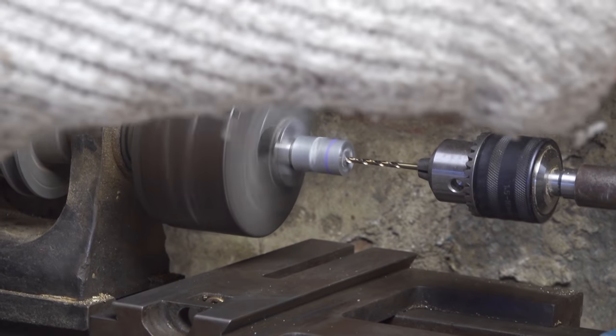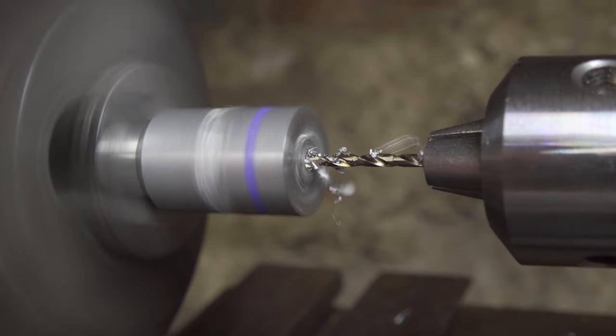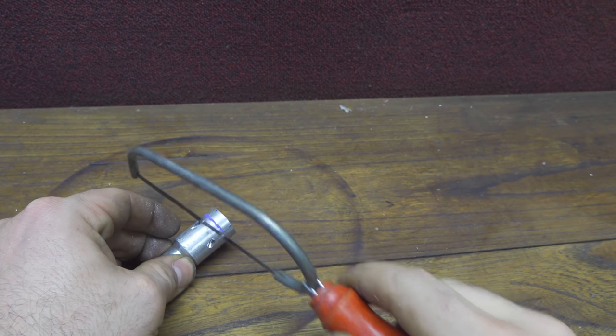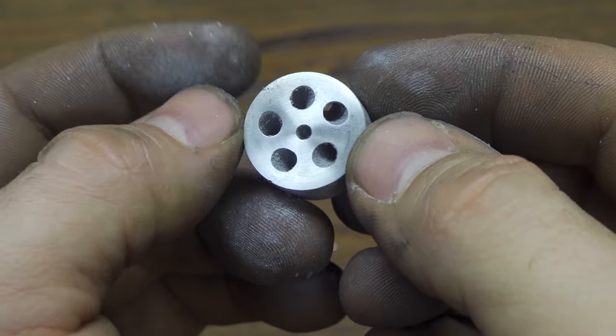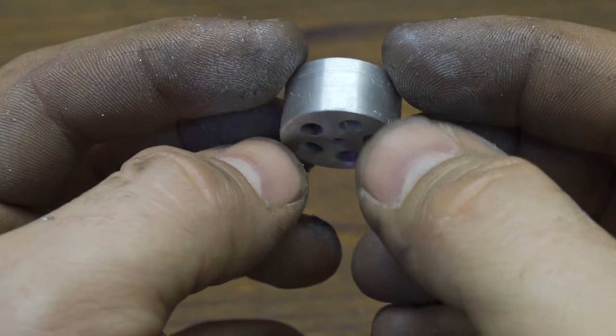And this is the result. I can use my lathe then to find exactly the center of the aluminum part. And with a smaller drill bit, in this case 2mm wide, I can make a hole all the way through. So this is the part almost completed.